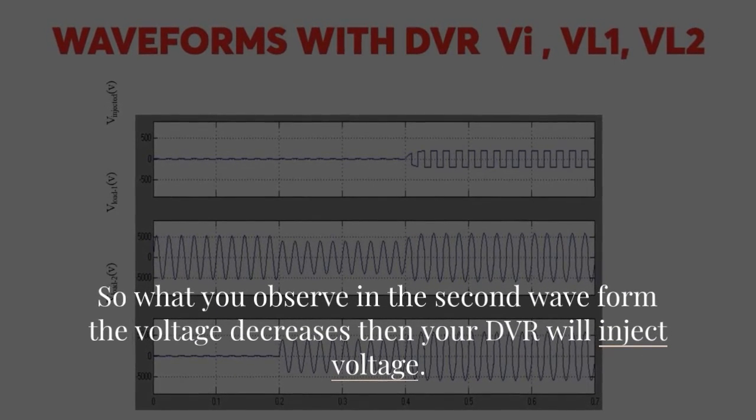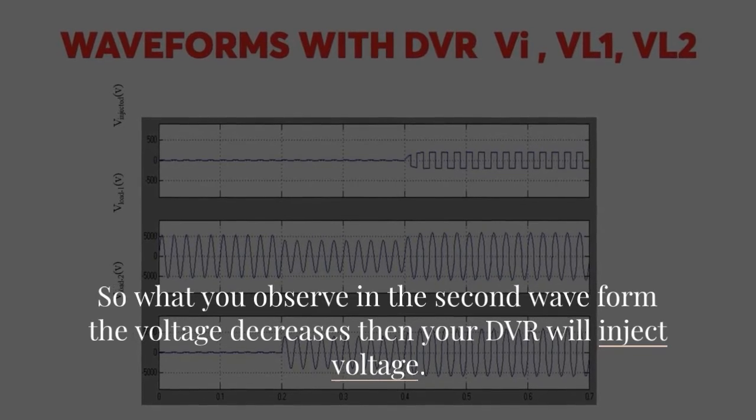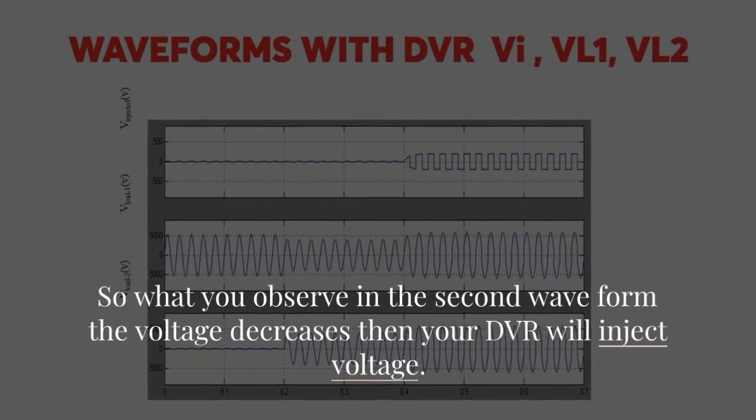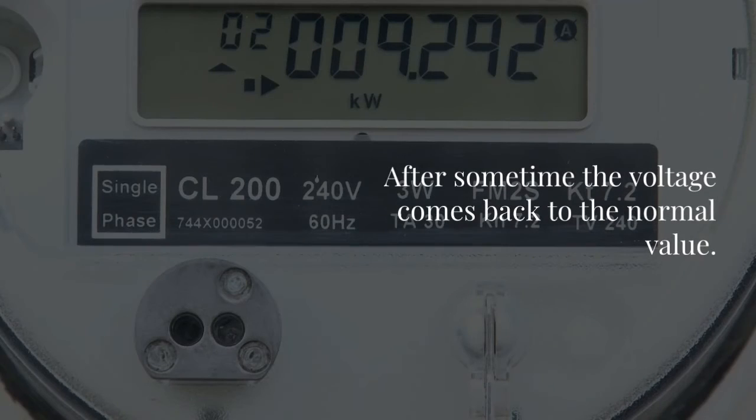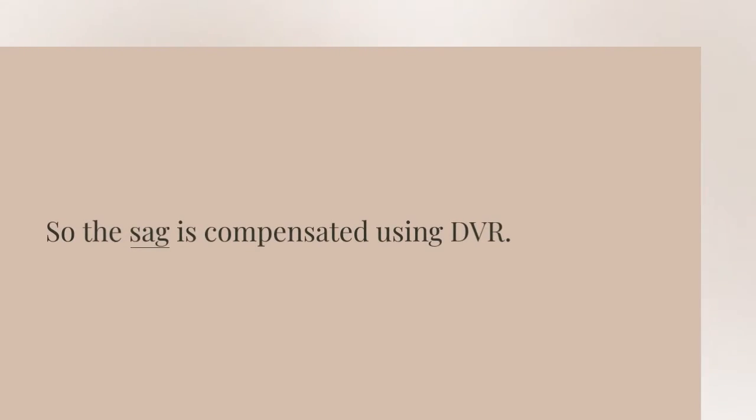So what you observe in the second waveform the voltage decreases. Then your DVR will inject voltage. After some time the voltage comes back to the normal value. So the SAG is compensated using DVR.